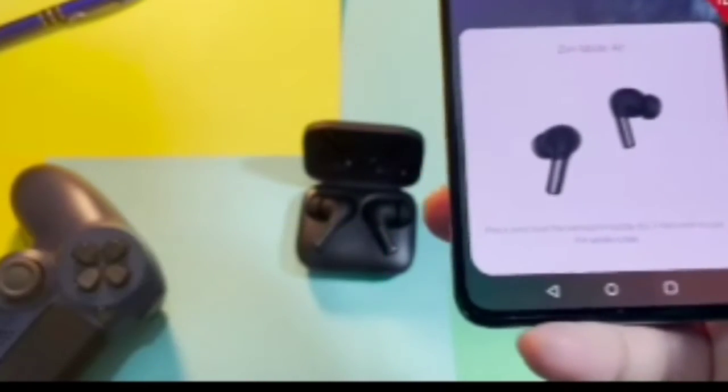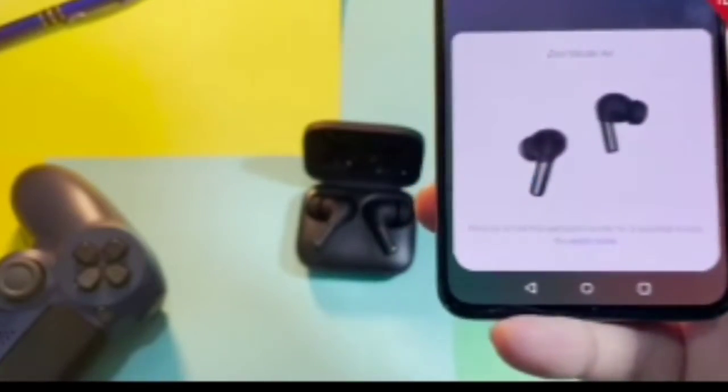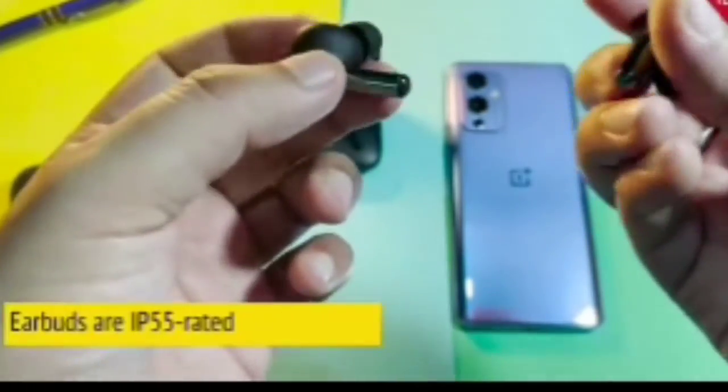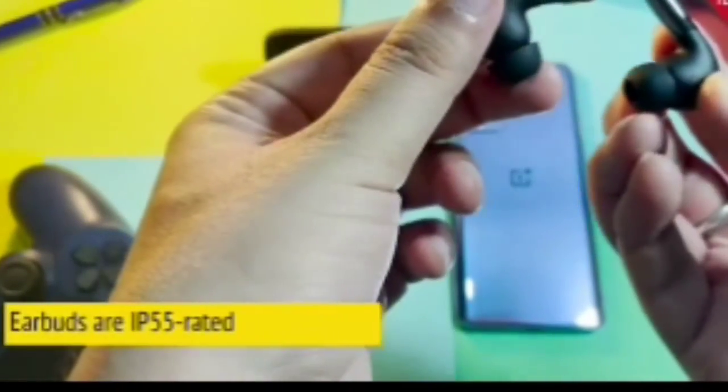In terms of protection, the OnePlus earbuds have IP55 resistance, which means that they can give you some sort of protection against both dust and water. While the charging case itself comes with IPX4 grade water resistance, so it can also withstand some splashes of water.